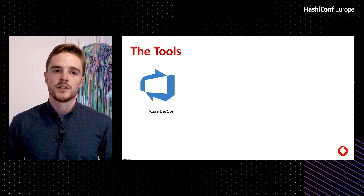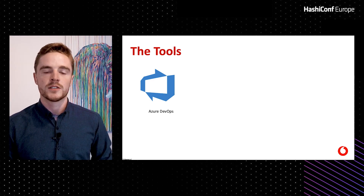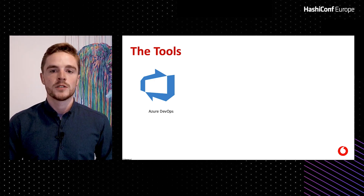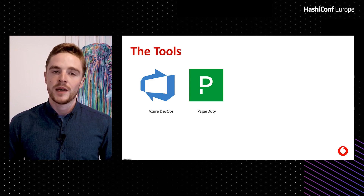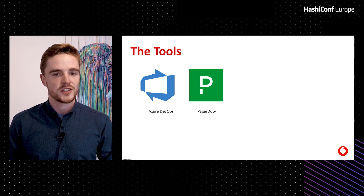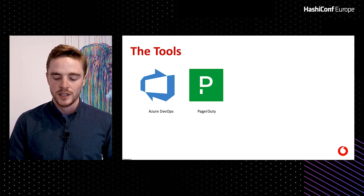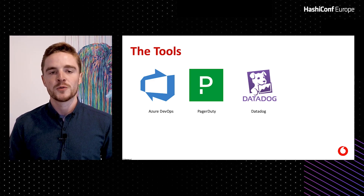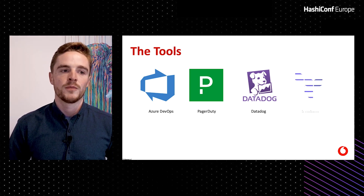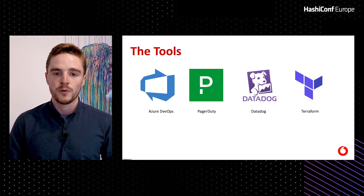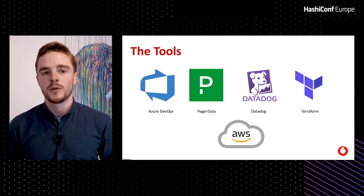I also wanted to talk about the tools we started using. We had Azure DevOps as our CI/CD — all our repositories, releases, teams, and users were stored there. We had just started using PagerDuty, though at the time it was mostly manual configuration. The same was true for our monitoring tool, Datadog. We were fortunate that both had a Terraform provider we could use. And all of our actual infrastructure and applications were running on AWS, which gave us a very good starting point.